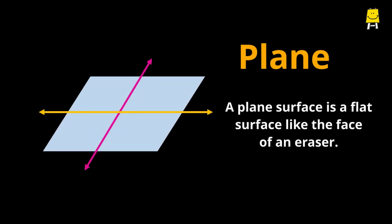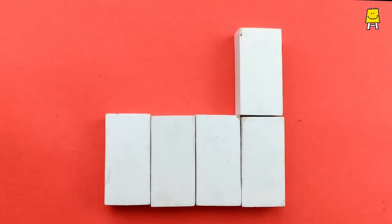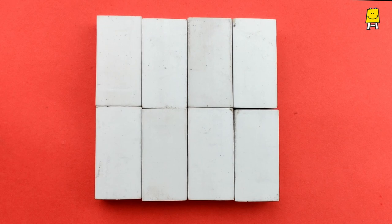A plane surface is a flat surface like the face of an eraser. These bones are placed adjacent to each other and can move along the faces.